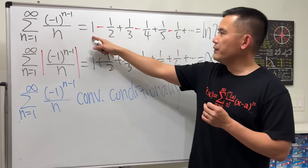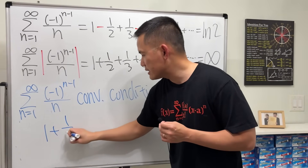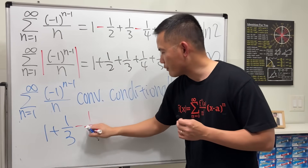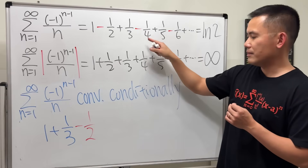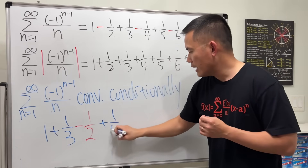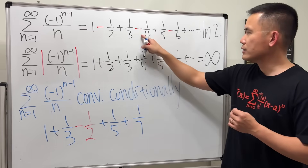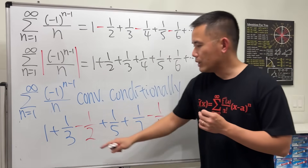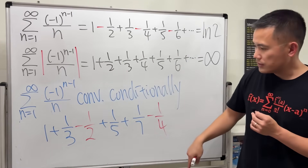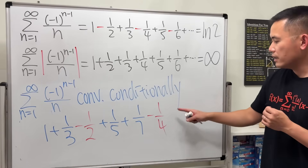Let me show you. If I take this series and write it as 1 plus 1/3, then minus 1/2, then 1/5 plus 1/7, then minus 1/4 — I'm taking two odd terms and then one even term. The even terms are the negative ones. Two odds, then one even, and so on.